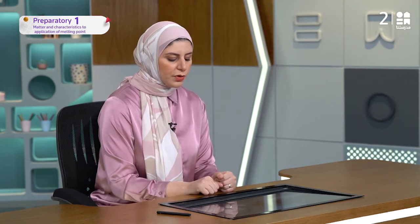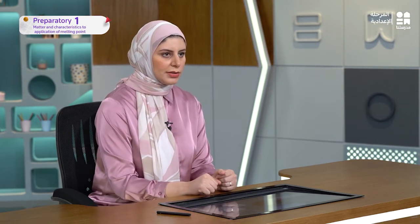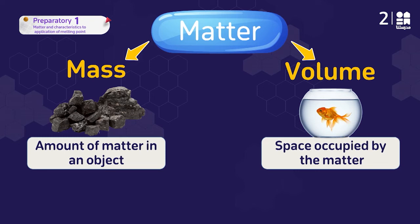And what about the volume? The volume is the space occupied by the matter — the space occupied by the matter. If you have a space in front of you, like a table with nothing on it, and you put your hand or a book on it, the book takes up a space or takes a part of the table. So your book or your hand is a matter and it has volume.